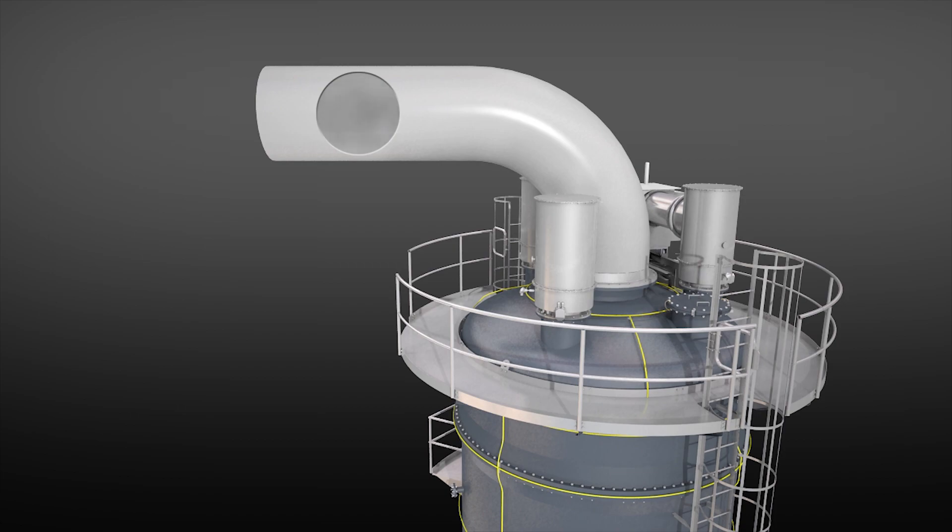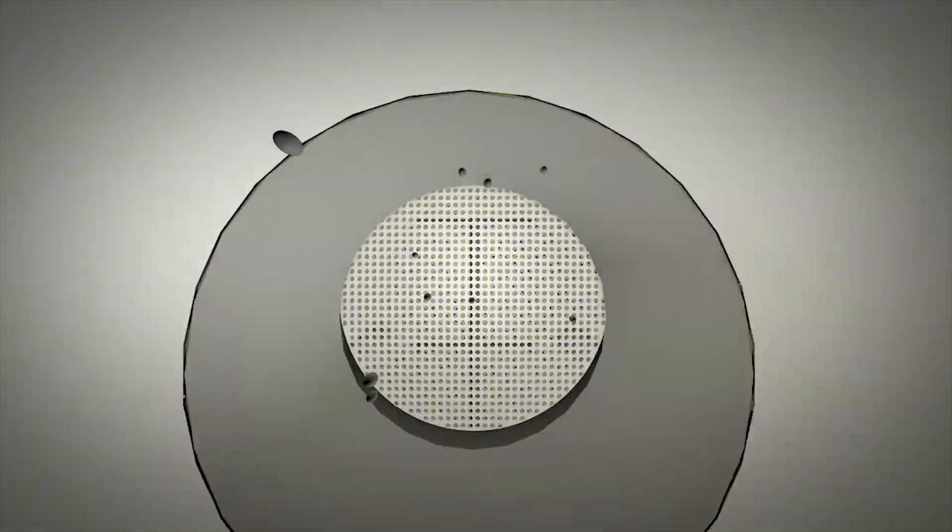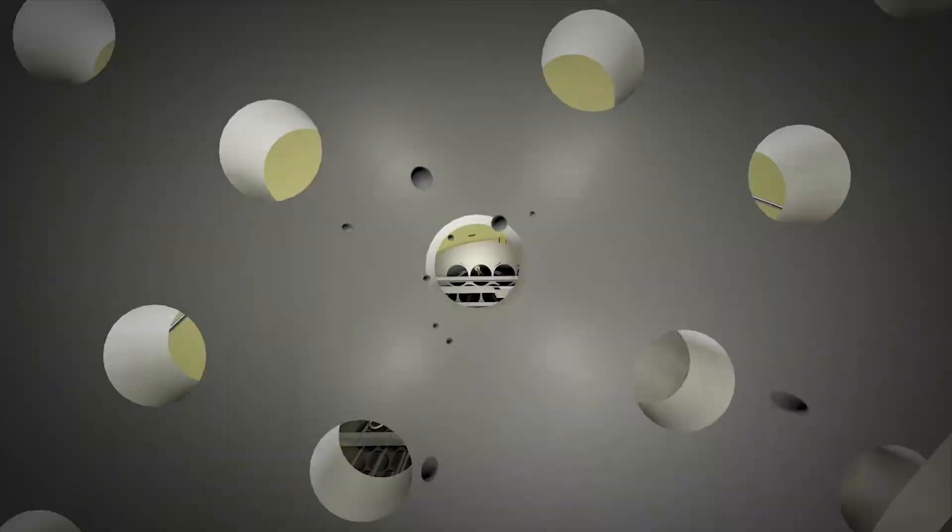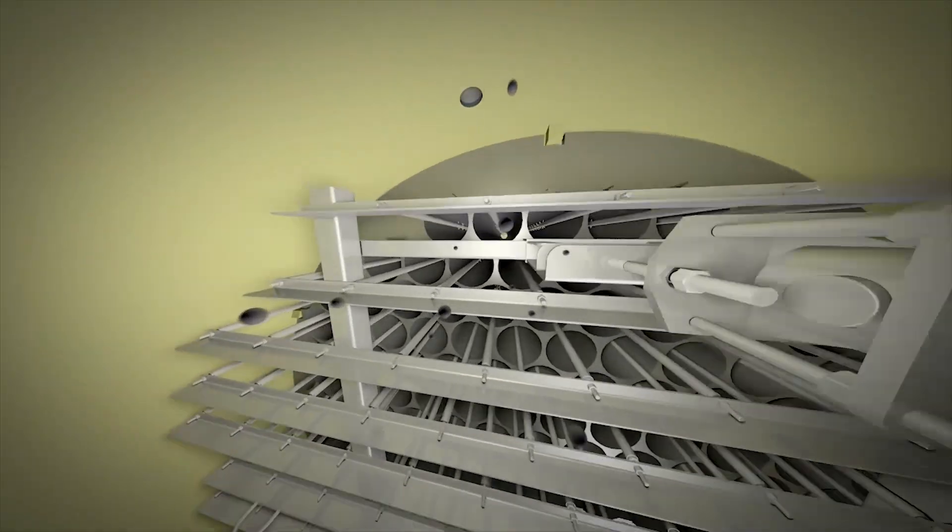Now let's take a tour through the unit from the perspective of a particle to be removed. First we travel through the dual gas distribution system and pass the optional fogging system. Now we have the particles uniformly spread across the tube bundle inlet.